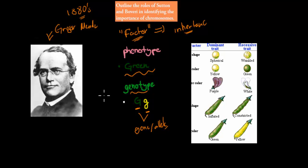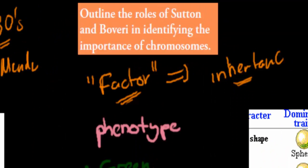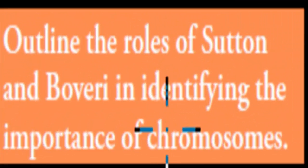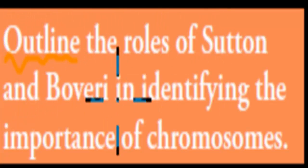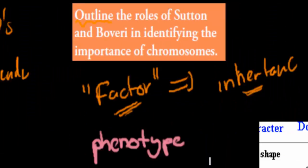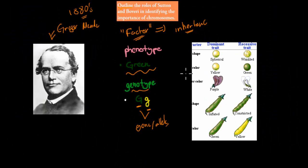Now then came Sutton and Boveri, and we have to cover these two. The learning objective says to outline the roles of Sutton and Boveri in identifying the importance of chromosomes. So we need to cover chromosomes and link them to the factors that Mendel described.